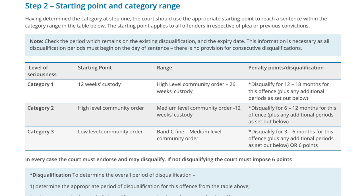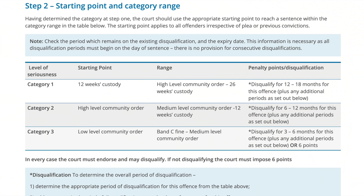Having determined the offence category, we move to step two, which tells the court the starting point and the range for that category. The range covers everything from the lowest penalty up to the most severe. The starting point is the level the court looks at before considering aggravating or mitigating factors — aggravating making things worse for the defendant, mitigating being reasons why the defendant should receive a lesser penalty.